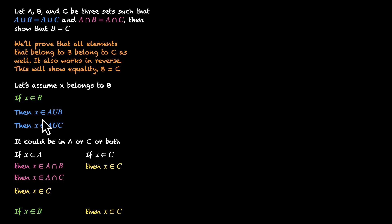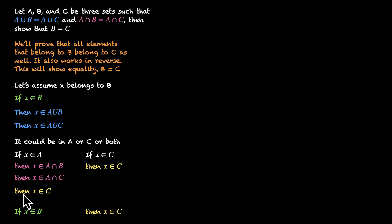We might as well have started with x belonging to C and reached the same conclusion for B. This works the same way — there's nothing special about B. So if all elements in B are in C and all elements in C are in B, then B and C are the same sets — B equals C.